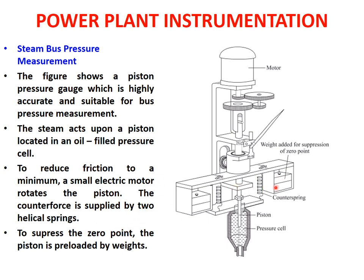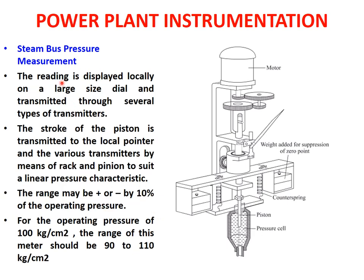To suppress the zero point, the piston is pre-loaded by weights. The reading is displayed locally on a large-size dial and transmitted through several types of transmitters. The stroke of the piston is transmitted to the local pointer and various transmitters by means of a rack and pinion arrangement to suit a linear pressure characteristic.